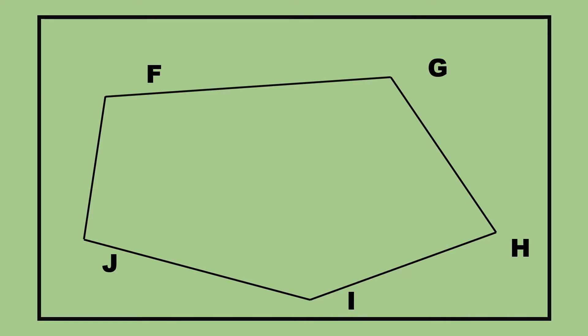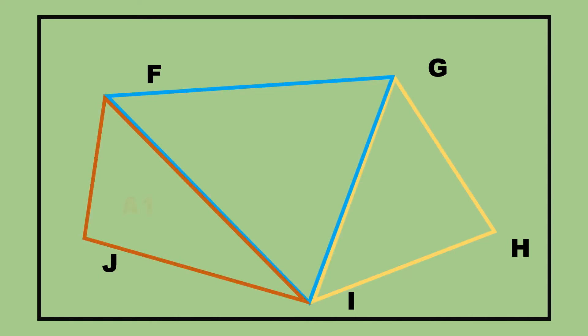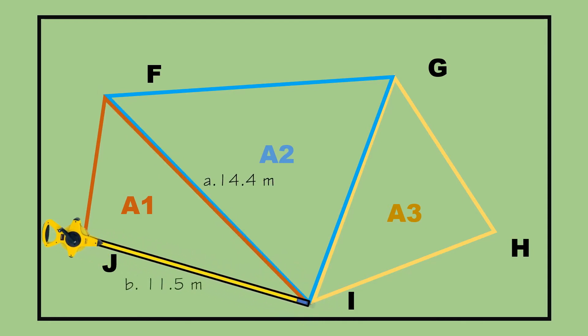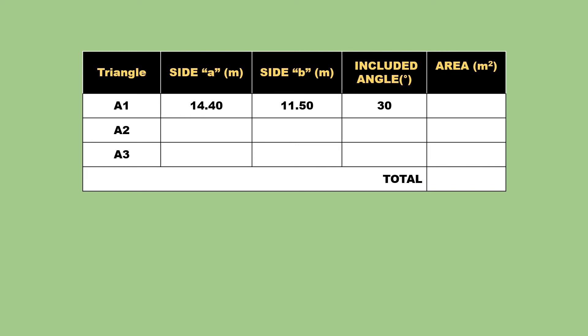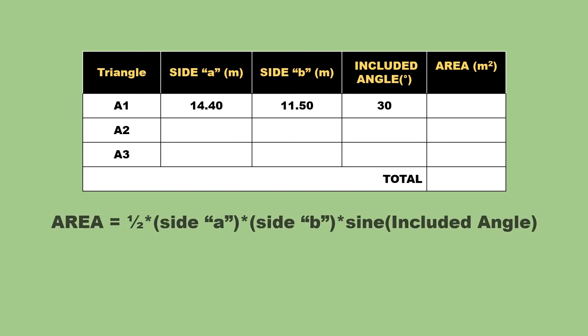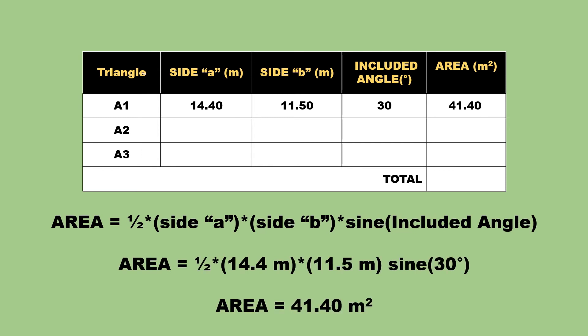Step 2: Divide the polygon into 3 triangles as A1, A2, and A3. Step 3: Measure any two sides of the first triangle chosen and record these measurements as sides A and B. Step 4: Determine the included angle between sides A and B and record this on Table 3.2, Area Determination by Two Sides and Included Angle. To get the area of the triangle, divide the product of side A, side B, and sine of the included angle by one-half.